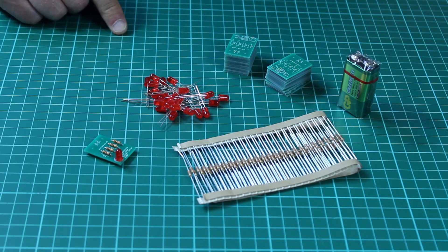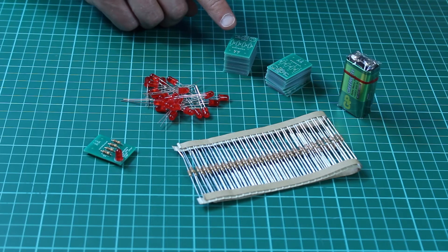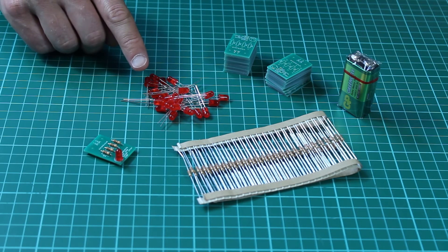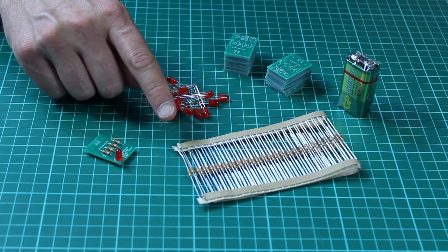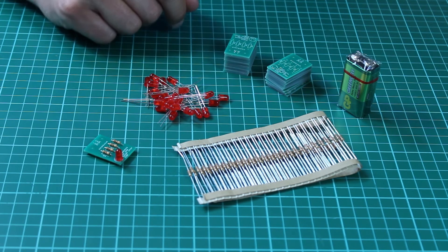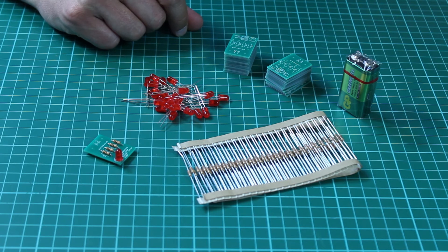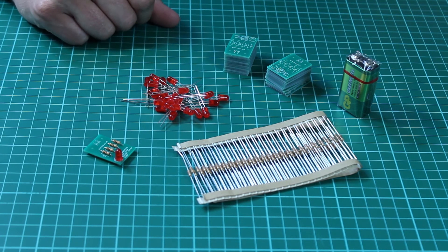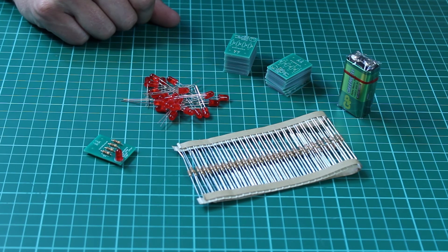The learn to solder kit is supplied in a pack of 25, so you get 25 PCBs, 25 LEDs, 100 resistors because there's four per board, and one battery for testing the circuit afterwards. The kit is supplied with a comprehensive learn to solder guide...